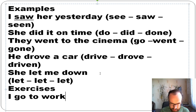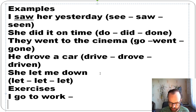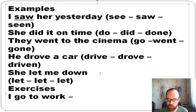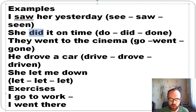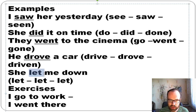Now some exercises. 'I go to work' — can you say it in the past? You need to know the forms of 'go': go, went, gone. So: 'I went there.' You need to know forms like saw, did, went, drove, let.